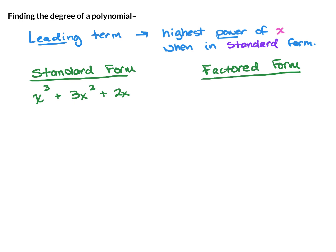Factored form is when it's completely factored out. So in the first polynomial, the leading term is x cubed because it has the highest power of x, and so the degree is 3.